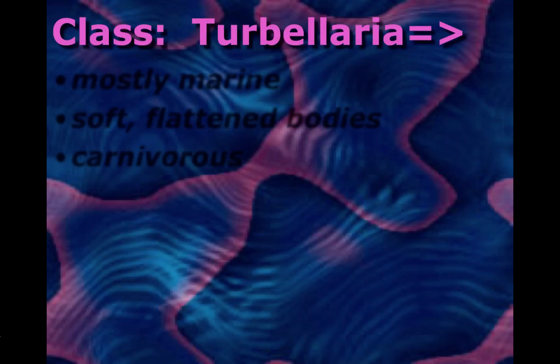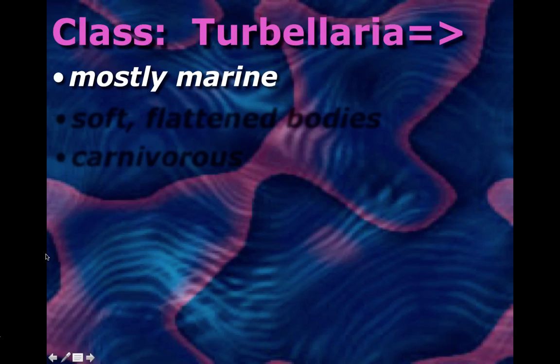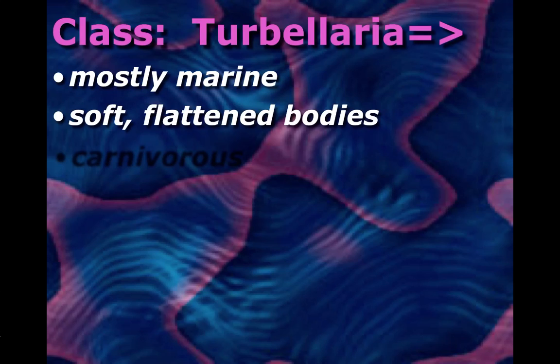Within flatworms, there are three groups of worms. Class Turbellaria is our first group, and those are mostly marine — that means most of them live in the ocean. Like all other flatworms, they have soft, flattened bodies. Their bodies being flat is a key trait of this group. They're all very soft — no exoskeleton, no bones, nothing like that.